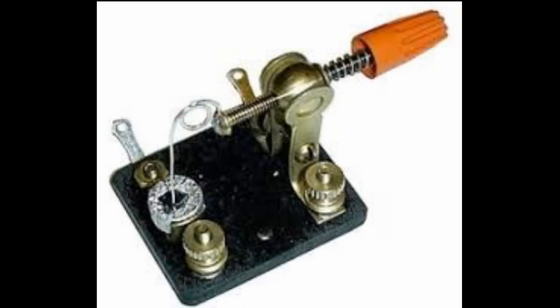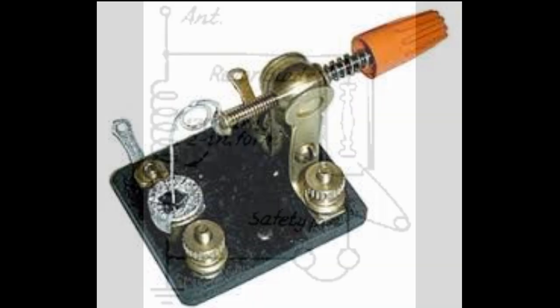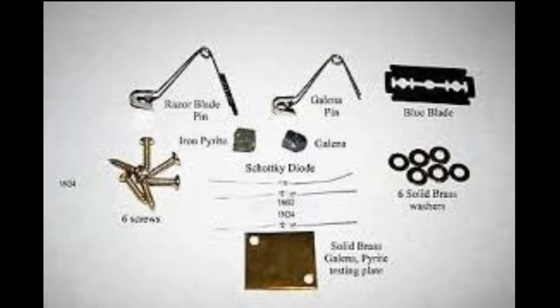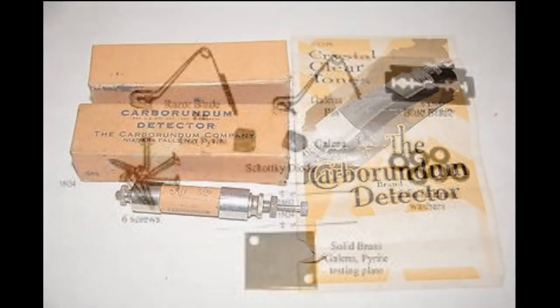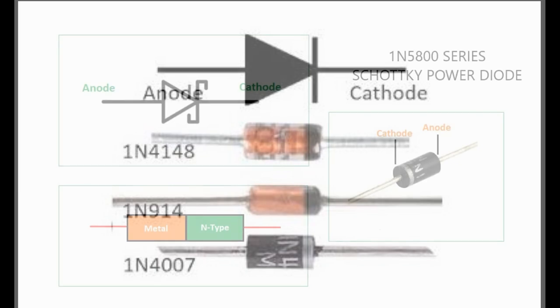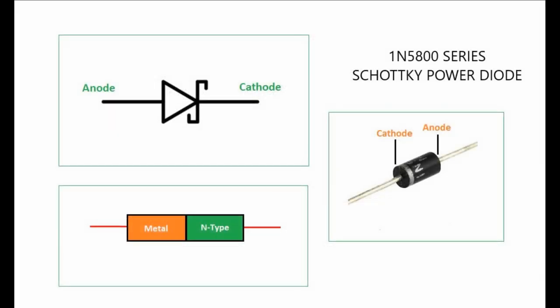Now that you're loaded with all this information, we have to think about the old cat's whisker detector, the razor blade detector, and some of the other early Carborundum-type detectors. I'll leave you with a question: what type of diode do you think they are — a P-N junction diode or a Schottky type? I was going pretty fast with the explanations and there are probably some mistakes, but the idea is just to get a good feel for how diodes work, what the P-N junction is, and what a Schottky diode is, so we can go on to the next video.